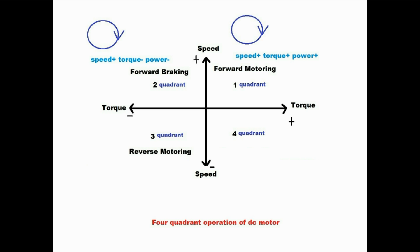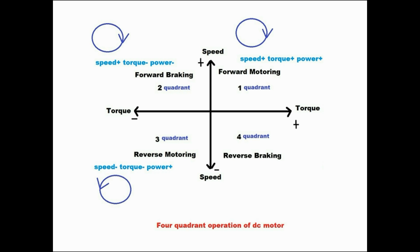Third is reverse motoring in third quadrant. The terminal voltage is interchanged, so the direction of rotation is reversed. Speed and torque are negative and power is positive.